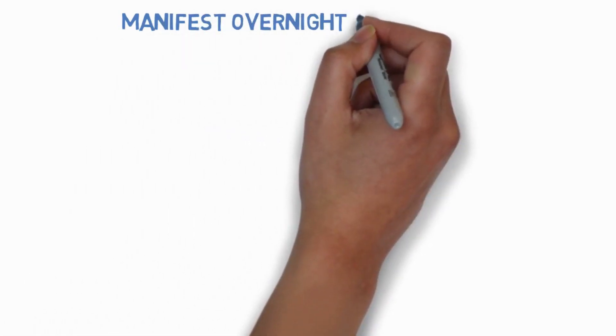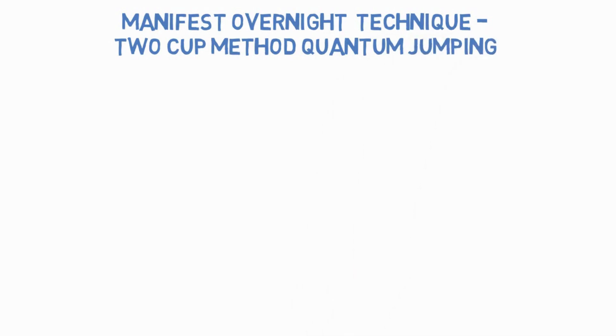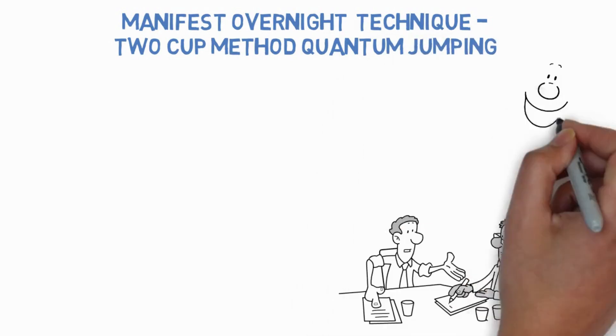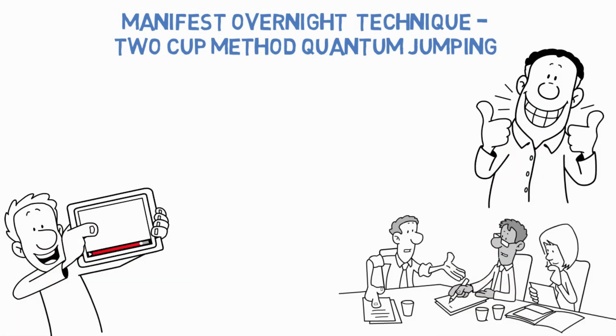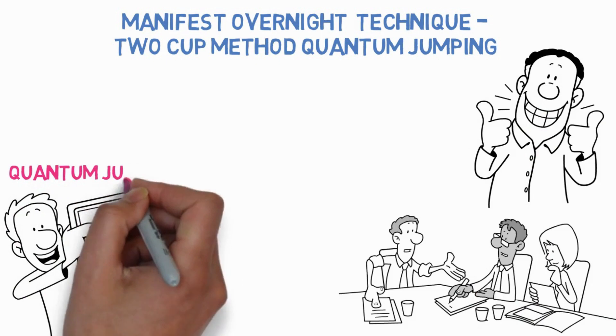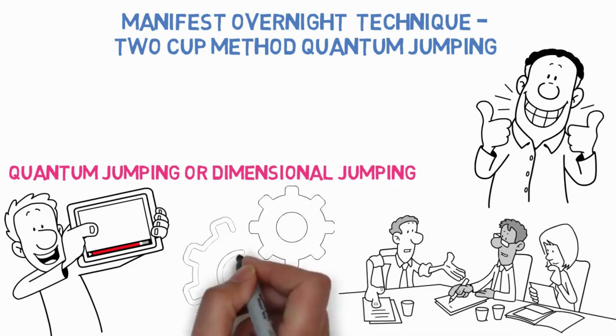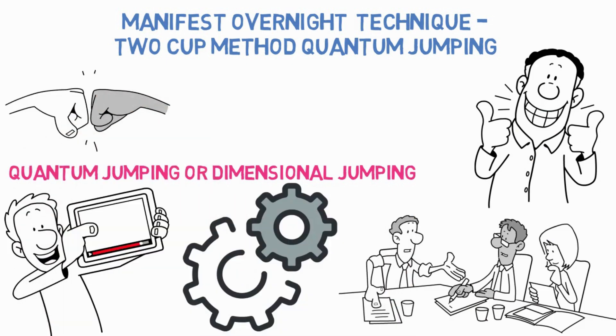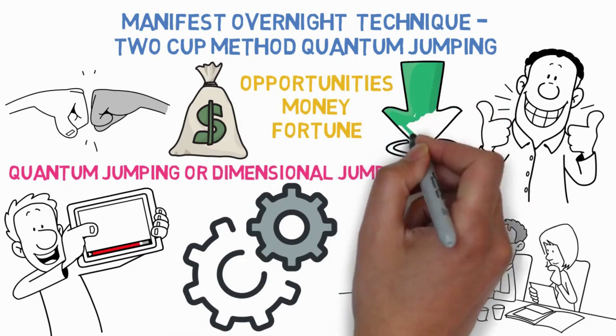Manifest Overnight Technique: Two Cup Method Quantum Jumping. Are you someone struggling to manifest things? Then you have come to the right place. In this video, I am about to share a technique called Quantum Jumping or Dimensional Jumping. I have been using this technique for many years and it helped me to receive opportunities and to attract money and fortune. I hope this will help you as well, so stay with us until the end.